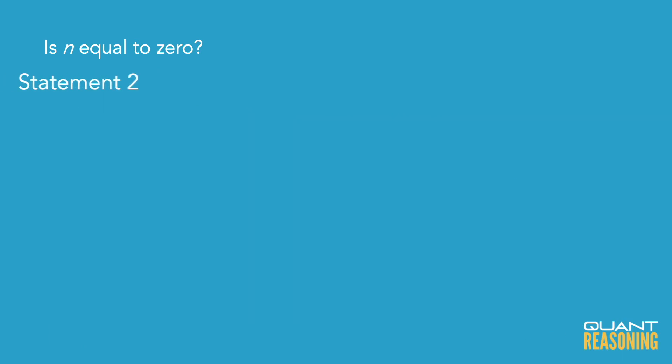Now Statement 2 tells us that the sum of n and 0 is 0. Well, what kind of number would you add 0 to and still just get 0? I think that the only number that works for is 0. 0 plus 0 is 0, but any other number plus 0 would not be 0.